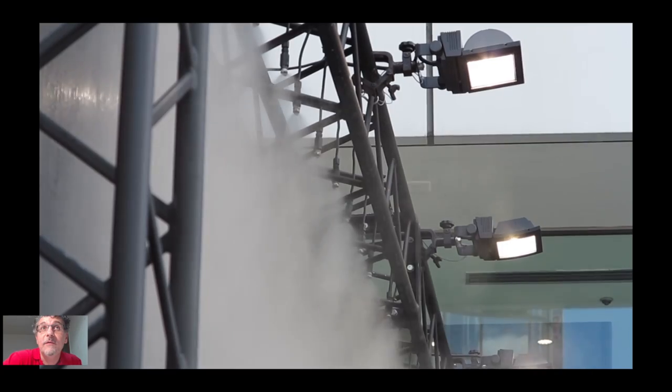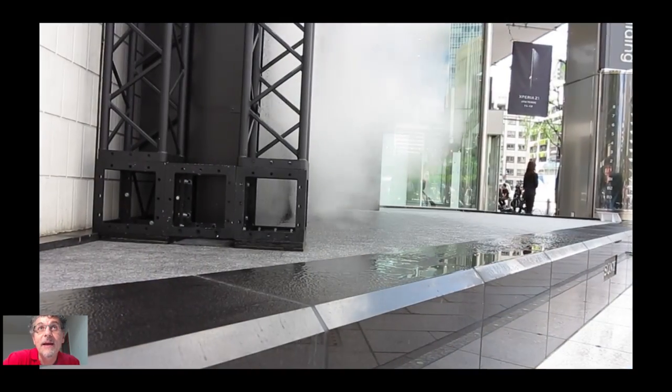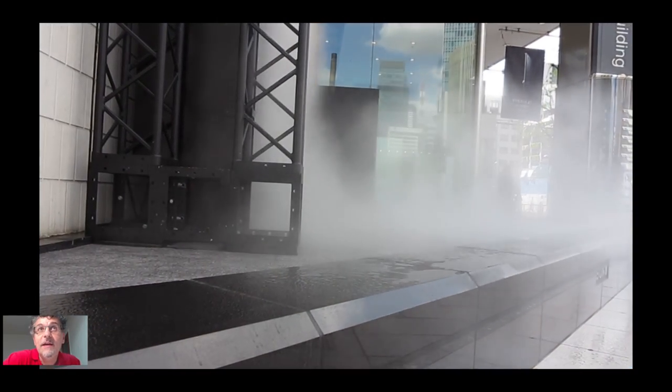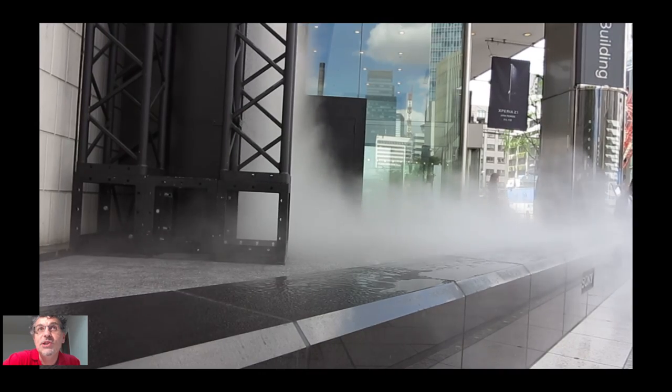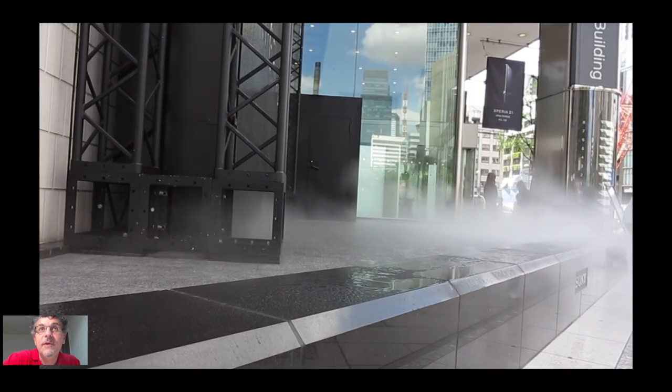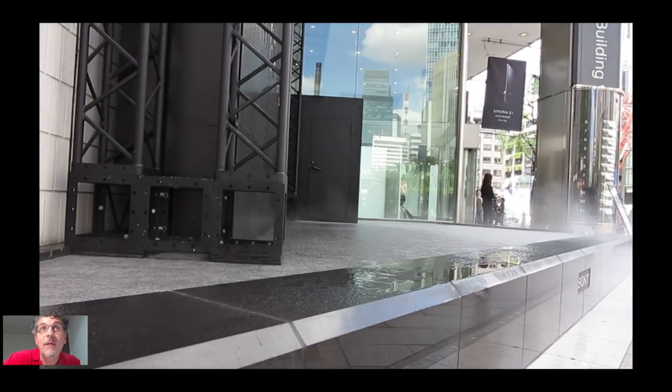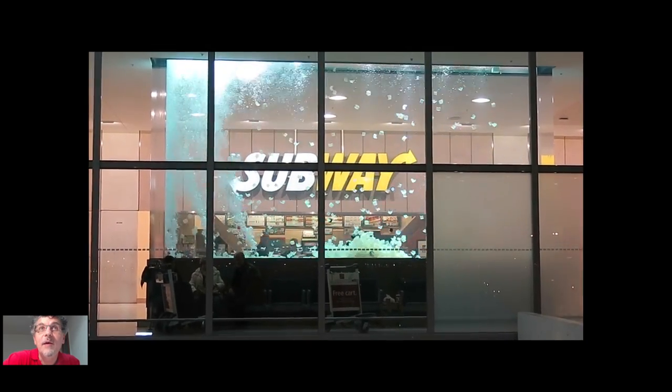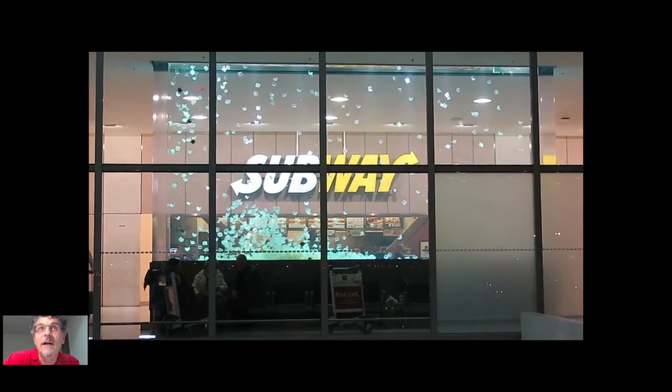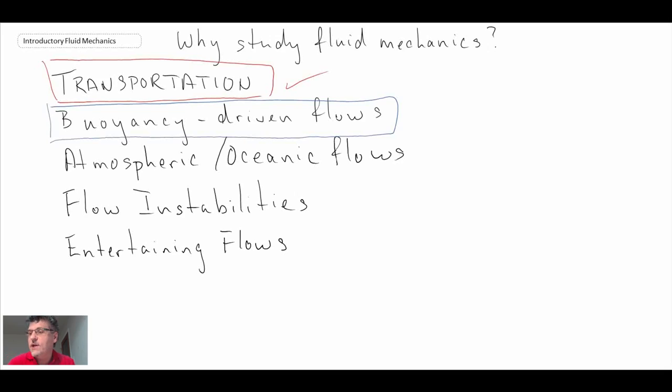This is another buoyancy-driven flow in front of the Sony building in Tokyo, Japan. You can see the heavier mist descending, hitting the ground and moving off to the right in a little jet. That's an example of buoyancy-driven flow going downwards instead of up. This is in Toronto Pearson International Airport. The bubbles are causing circulation in this flow cell. You can see the cubes moving due to injection of circulation from the bubbles rising due to their buoyancy.